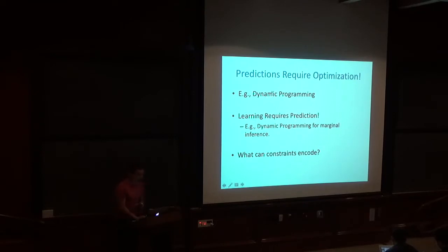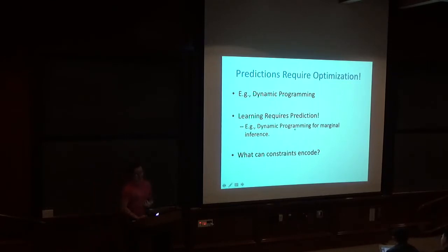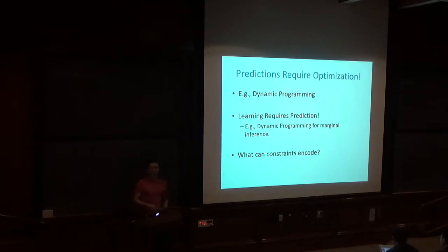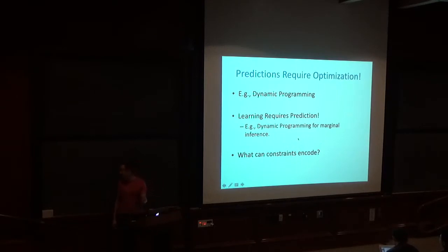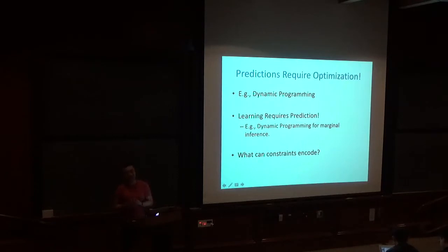In structured prediction, the prediction task is non-trivial and requires running some optimization algorithm, while learning requires running a prediction task. People study whether running approximate dynamic programming — say, sampling a few traces and picking the best — gives a gradient that's good enough, since early in training the model parameters are really bad anyway. The tradeoff between inference, which is making a prediction, and learning in structured prediction settings is also a topic of contemporary research.